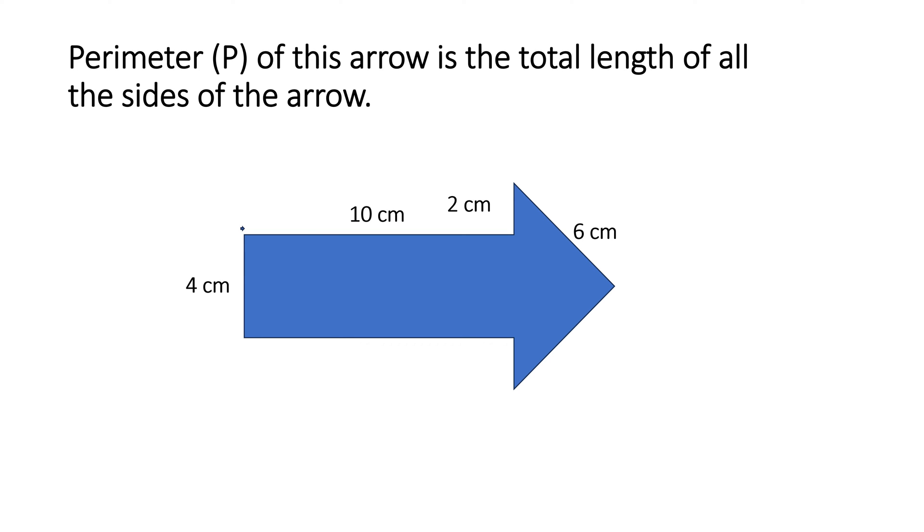We will write out the formula where P equals the side plus side plus side and so forth. And now we will fill in the values. We do not know the perimeter yet, but we will start with the end of this arrow where the length is 4 centimeters. So we have 4 plus 10, then we have a 2 and a 6. And since this is a symmetrical shape we can safely assume the opposite sides will have the same lengths.